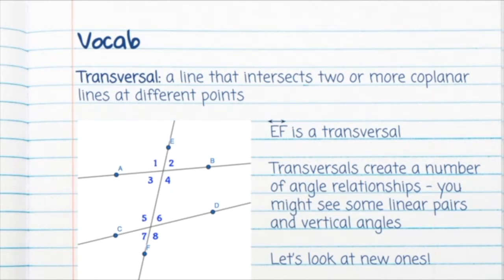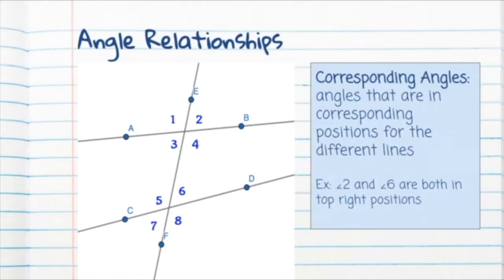You might see some familiar linear pairs or vertical angles. Let's look at some new ones. Corresponding angles are angles that are in corresponding positions for the different lines. So angles two and six are both in the top right position, so they're corresponding angles.